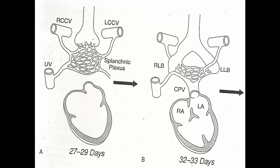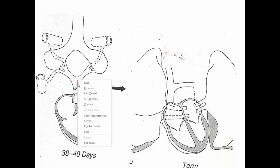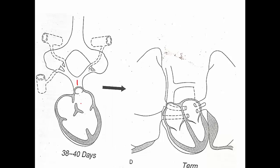Now let's look at the embryology in a bit of detail. This is your lung bud, splanchnic plexus, and heart at about 29 days. A few days further ahead you can see a common pulmonary vein has developed from the splanchnic plexus, with the right and left lung buds. A week further ahead, the pulmonary veins are forming — at this stage just one common pulmonary vein draining into the left atria. By term, the common pulmonary vein has given way to four separate pulmonary veins.